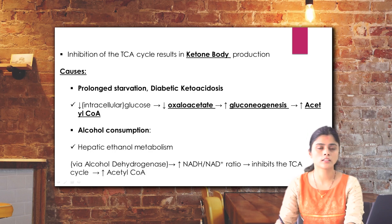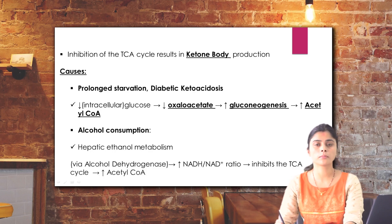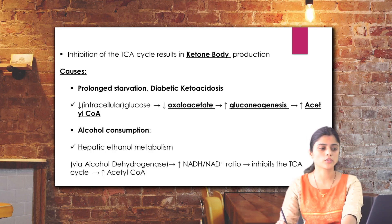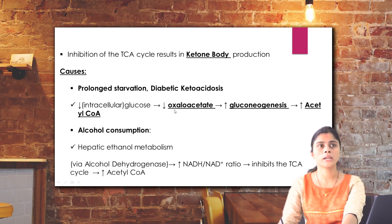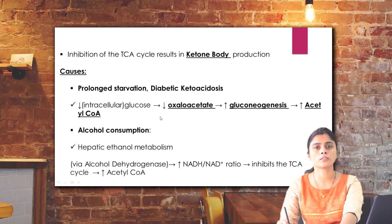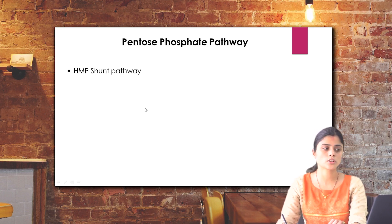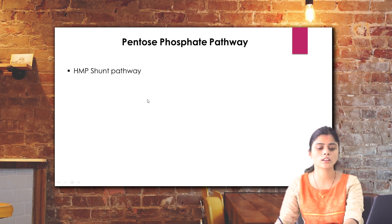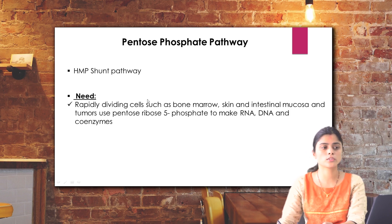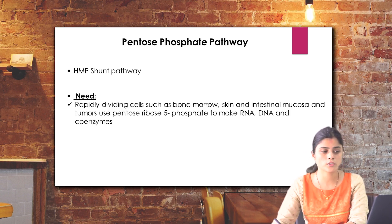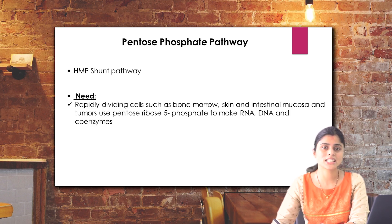Another important metabolic pathway is the pentose phosphate pathway, or hexose monophosphate pathway, which is mainly not for energy formation but rather for important biomolecule synthesis. The pentose phosphate pathway is also known as the HMP shunt pathway, where hexose sugars are shunted to form pentose sugars and other forms of hexose sugar at the end of metabolism. So why is it needed?